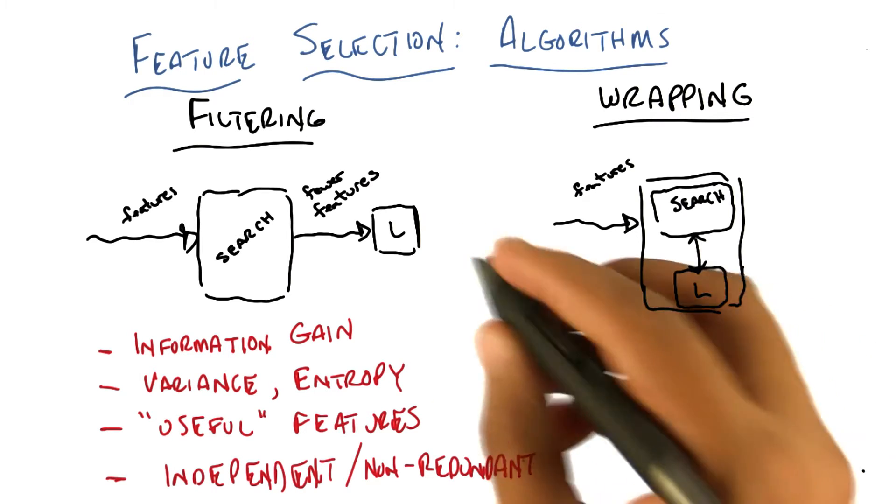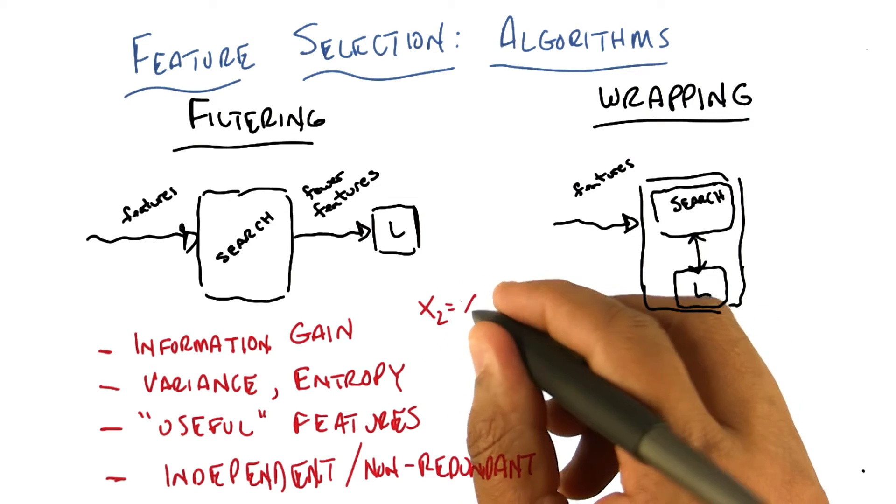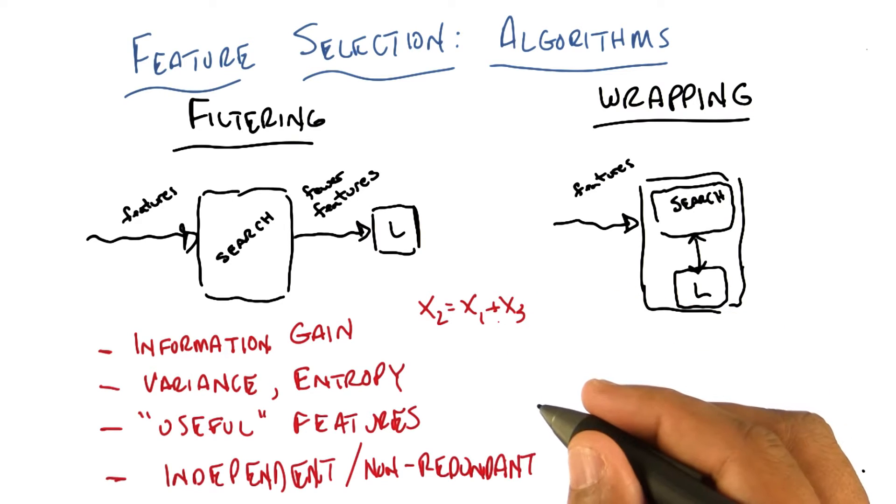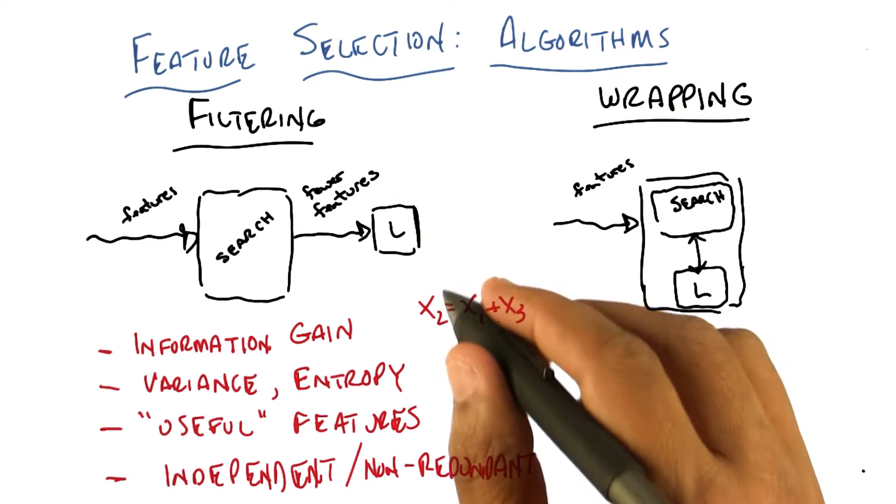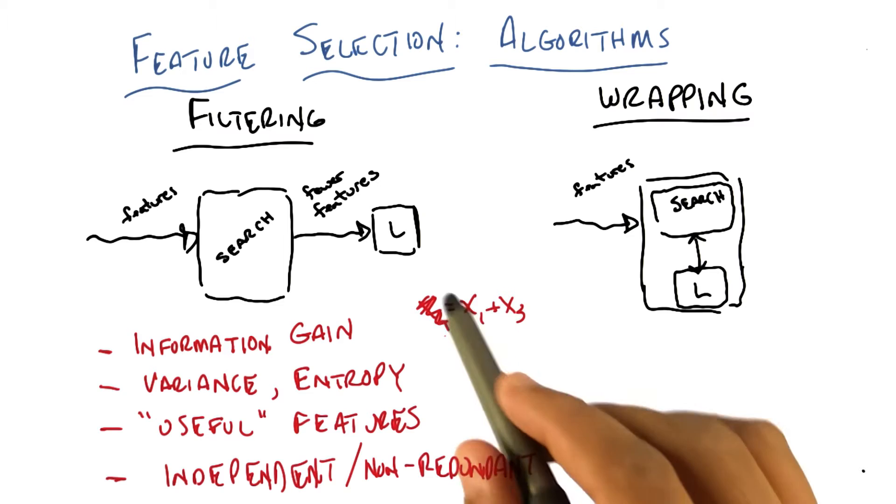But in this kind of linear algebraic sense. Right. So if I have a feature, let's say x2, which turns out to be equal to x1 plus x3, then I should probably get rid of x2. Is that what you're suggesting? Sure. Yeah, that is what I'm saying. Okay, good. And that makes sense, because I don't need x2.